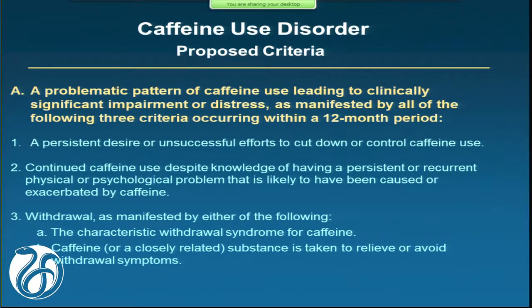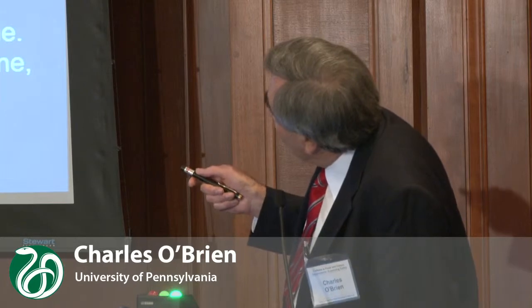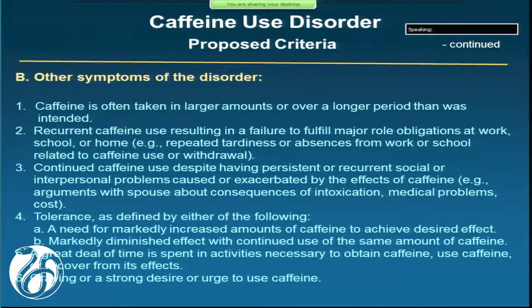This is the caffeine use disorder that would apply if research supports caffeine addiction. Roland has found some really interesting cases that would probably meet these criteria. It may be that there's a genetic factor that makes some people develop what you could call caffeine addiction. But based on our study, the great majority of people don't have the same kind of severity. Caffeine use disorder is in the appendix of DSM-5 — essentially taking the other symptoms of drug use disorder and putting them in proper terminology for caffeine.